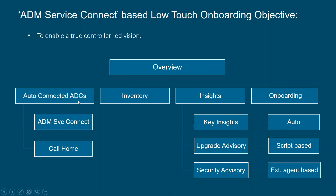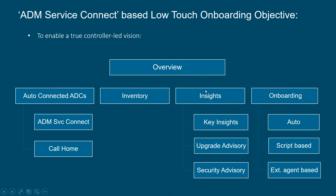If any of these features are enabled on your ADCs, they will be auto-connected to ADM Service, sending some limited metrics and events. Based on that, ADM creates an inventory for you showing which ADCs and gateways belong to you, along with insights — including Security Advisory insights. These insights are shared via a product-initiated email, after which you can come to the product and choose to onboard.